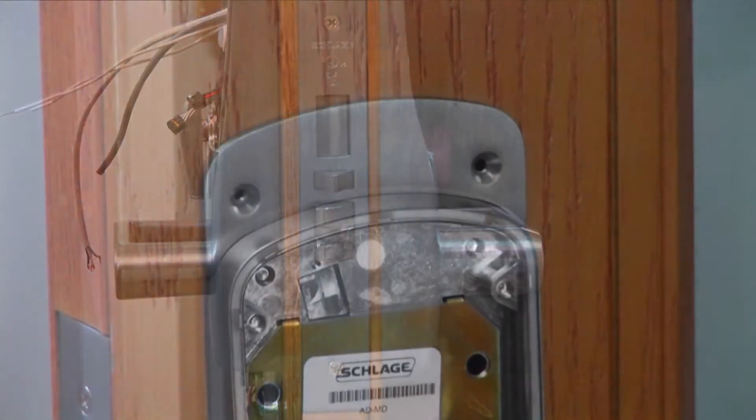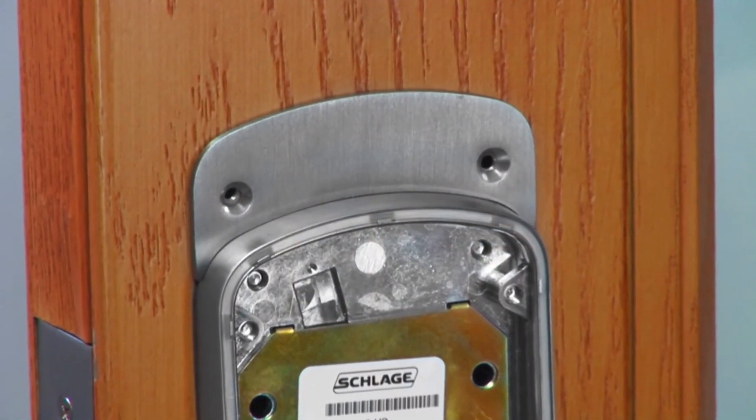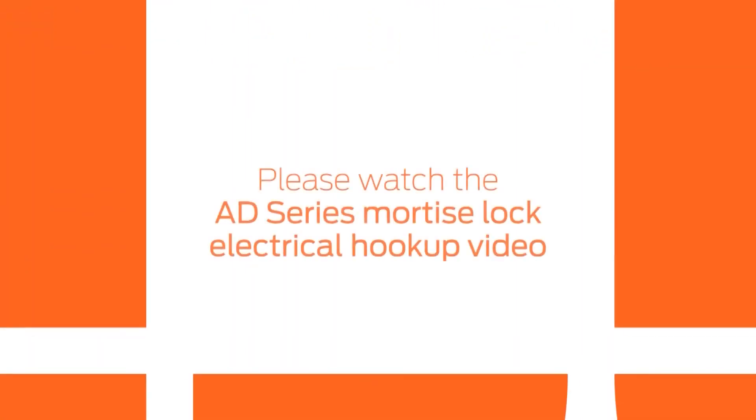In some retrofit cases, you may need to install an AD series decorative plate if there are any exposed holes. To complete the installation, watch the AD series mortise electrical hookup video.